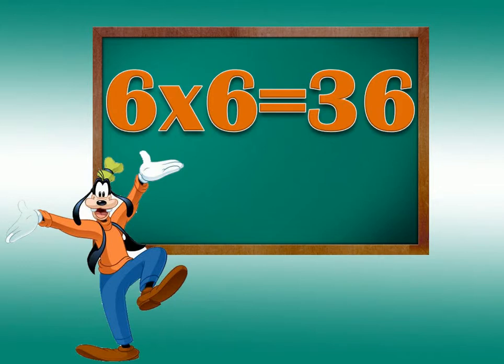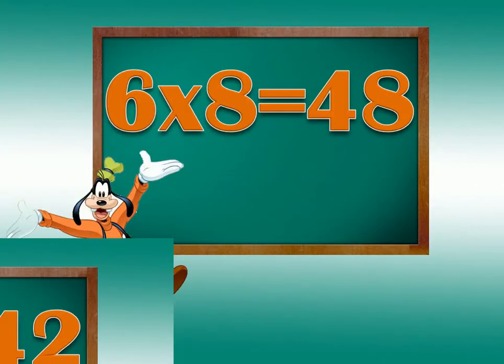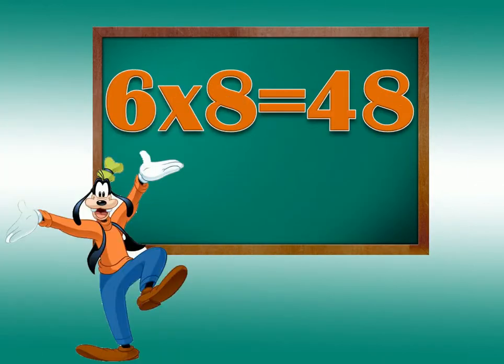6 times 5 equals 30. 6 times 6 equals 36. 6 times 7 equals 42.